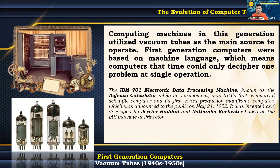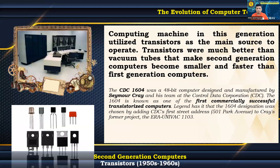The IBM 701 was invented and developed by Jerry Ehdrad and Nathaniel Rochester based on the IAS machine at Princeton. Computing machines in the second generation utilized transistors as the main source to operate. Transistors were much better than vacuum tubes, making second-generation computers smaller and faster than first-generation computers.